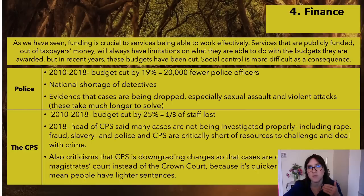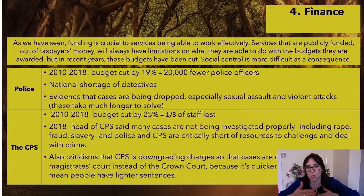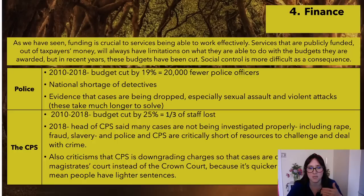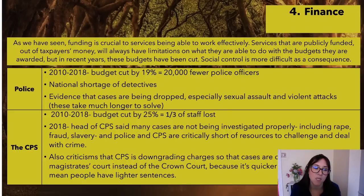This leads into a vicious cycle: people don't report crimes, then sexual assault goes unreported, etc. From 2010 to 2018, budget cuts for the CPS were 25% — they lost a third of their staff. The CPS are the ones that look at all cases and decide whether they should go to Crown Court or Magistrates Court.